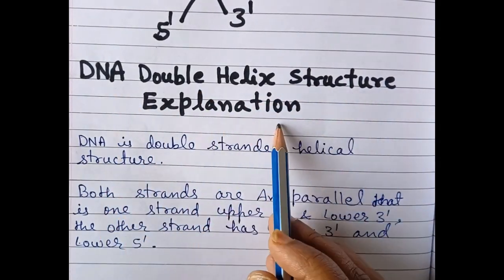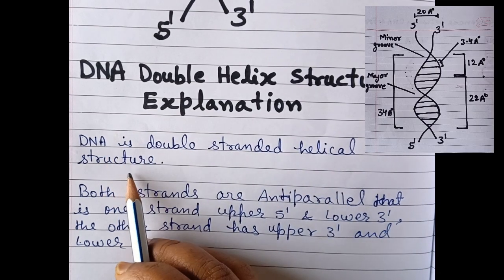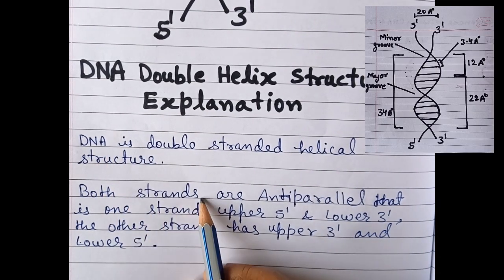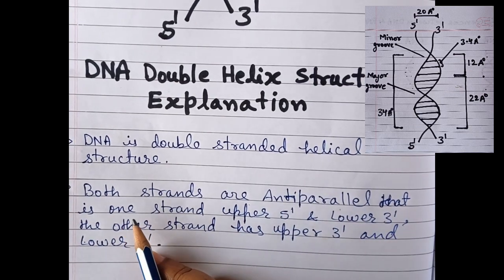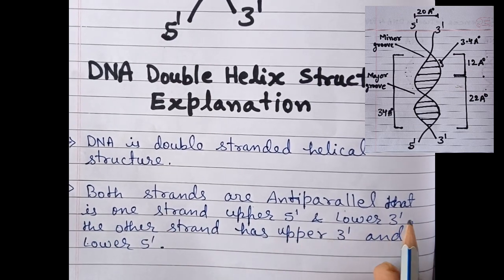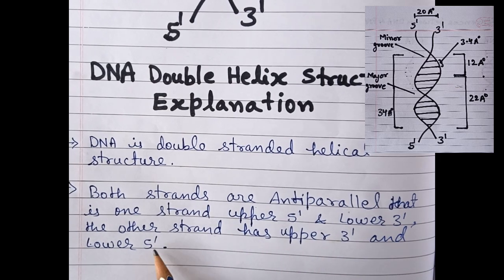DNA double helix structure explanation. DNA is a double-stranded helical structure. Both strands are antiparallel, meaning one strand has upper 5' and lower 3', while the other strand has upper 3' and lower 5'.